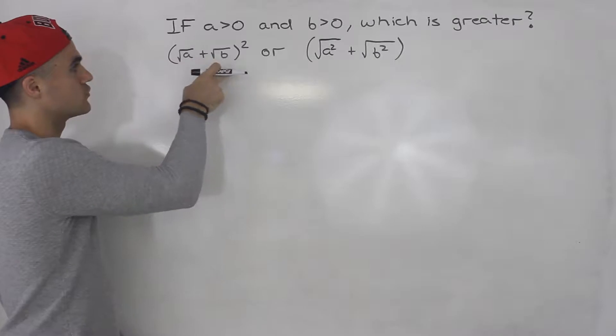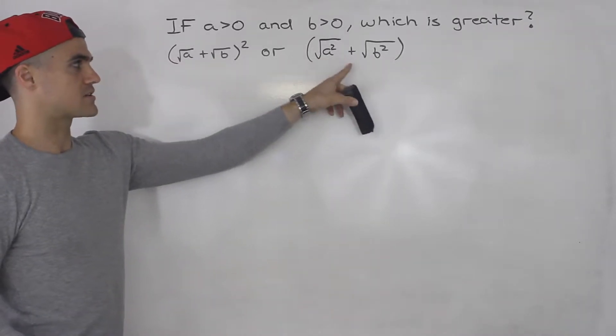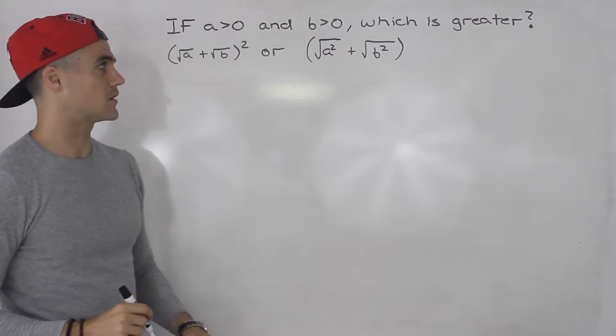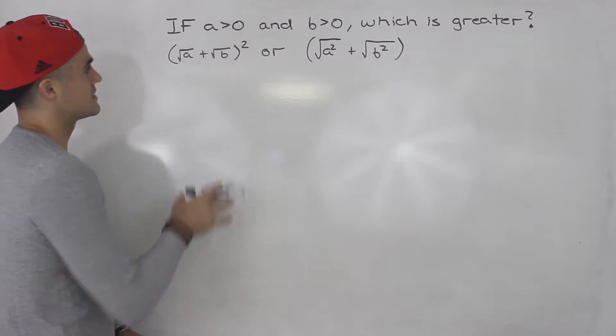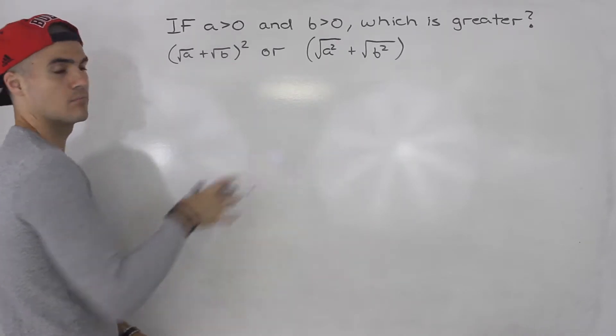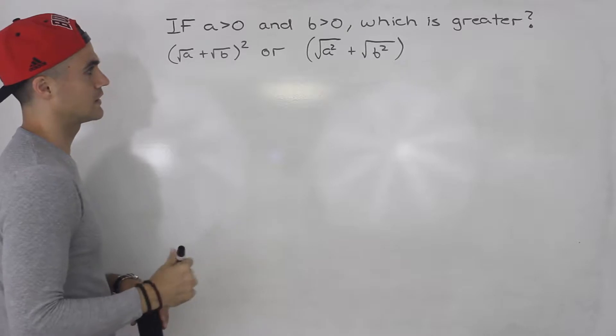Root a plus root b squared or the square root of a squared plus the square root of b squared? So the way I'm going to do this is I'm actually going to try to simplify both of these expressions and then maybe we can see from there which one is greater.